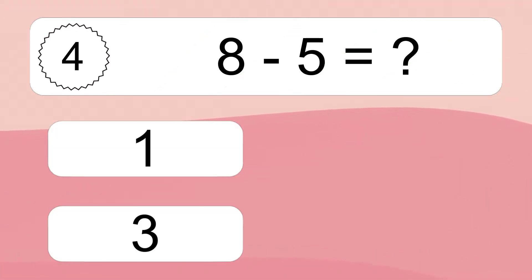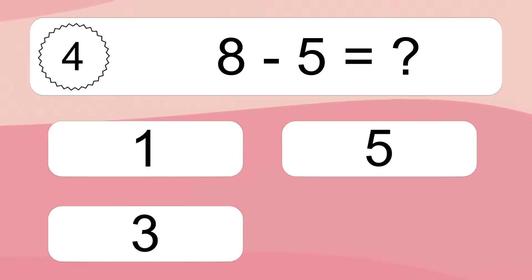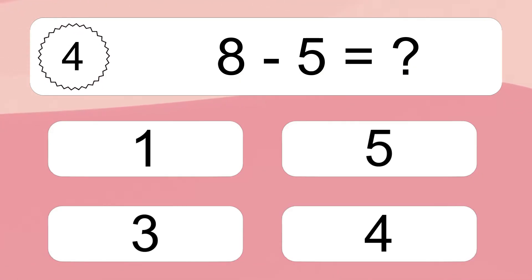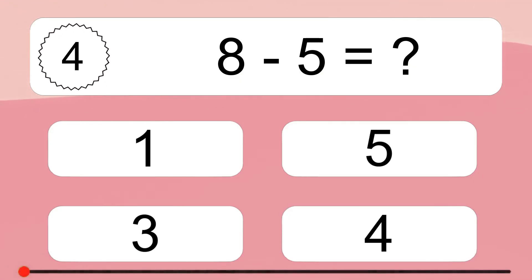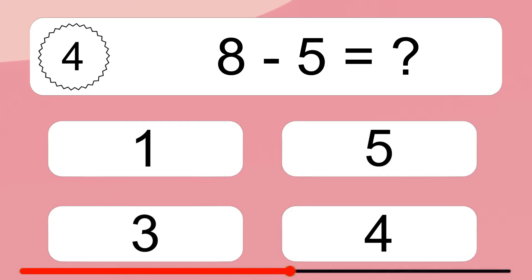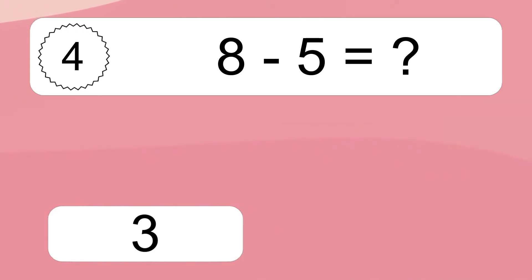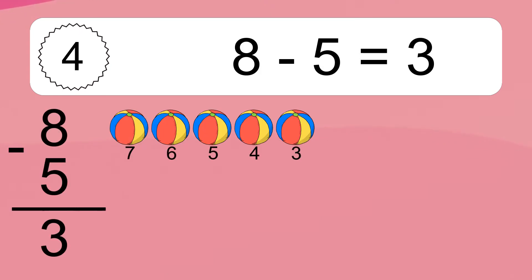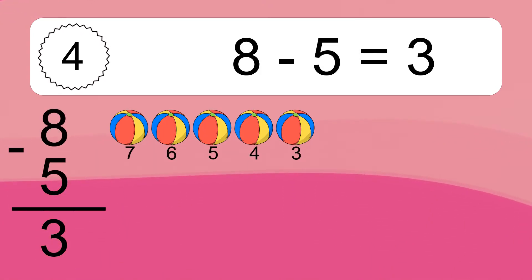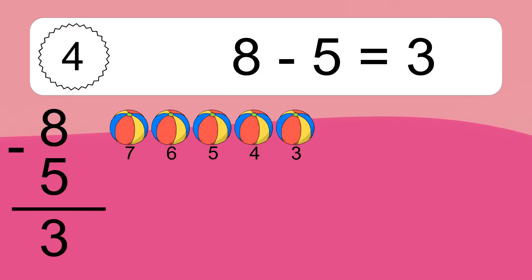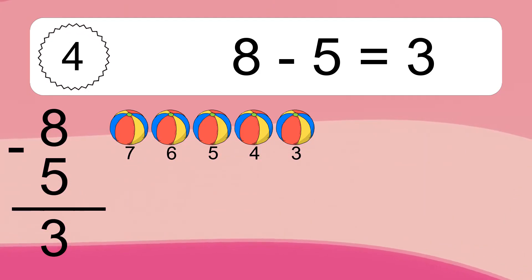8 minus 5 equals what? 8 minus 5 equals 3. Let's count it. 7, 6, 5, 4, 3.